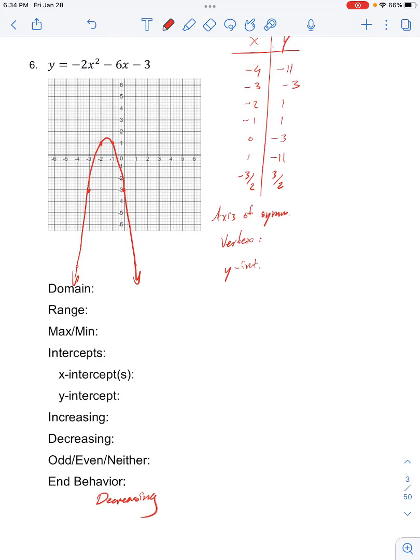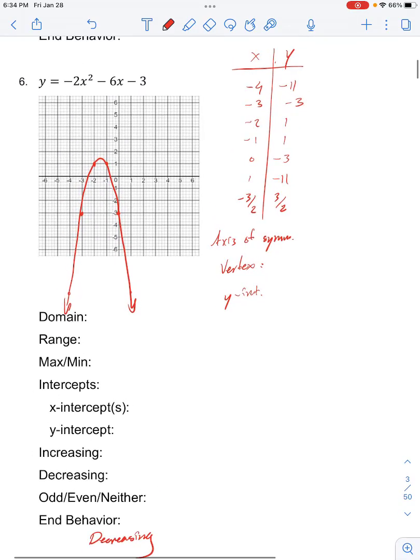But we're getting too ahead of ourselves. So first, the axis of symmetry occurs when x equals negative b over 2a, so that's negative b is negative 6, over 2 times negative 2, which is negative 3 halves. Our y value is 3 halves, so that gives us our vertex over here. So the axis of symmetry occurs at x equals negative 3 halves, our vertex is negative 3 halves, 3 halves.